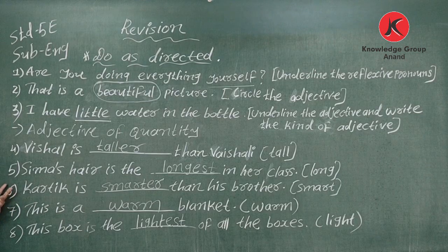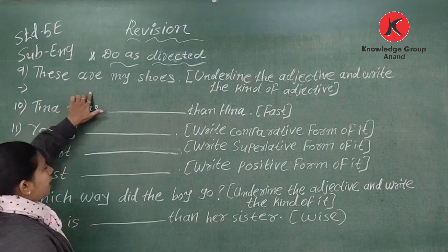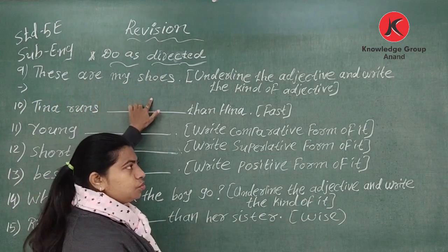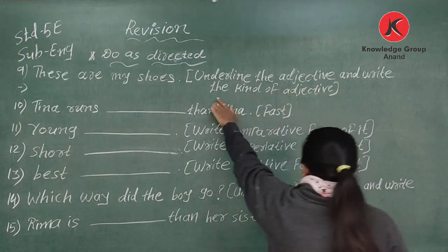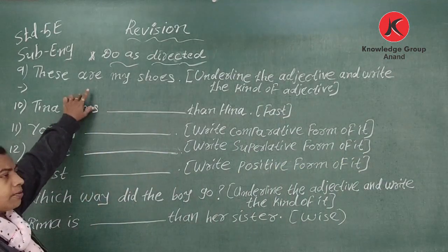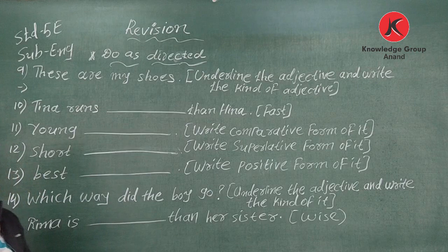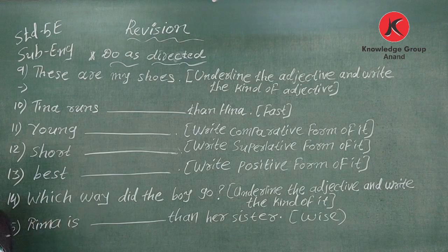Number nine: 'These are my shoes.' Underline the adjective and write the kind of adjective. In this sentence, we need to find the adjective, underline it. The adjective is 'my' — it is a possessive adjective.